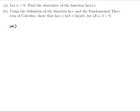So let's do part a. I want to find the derivative of ln(Ax). Let y be equal to ln(Ax), and then dy/dx is my derivative. I have the function ln with Ax inside it, so I need to use the chain rule. The derivative of ln is 1 on x, but I haven't got x inside my ln — I've got Ax — so it's 1 on Ax.